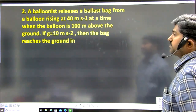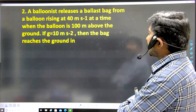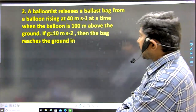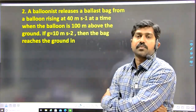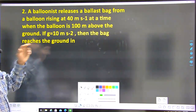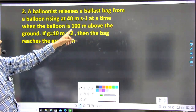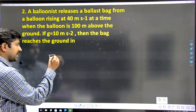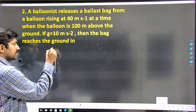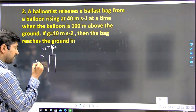Question two: a balloonist releases a ballast bag from a balloon rising at 40 meter per second at a time when the balloon is 100 meters above the ground. How long does the bag take to reach the ground? The balloon is rising at 40 meter per second upward, and at exactly 100 meters height the bag is released — equivalent to projecting the bag with initial velocity 40 meter per second from 100 meters height.